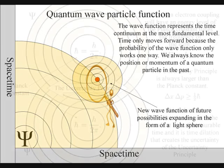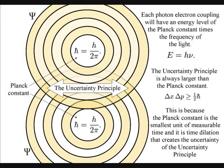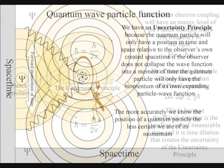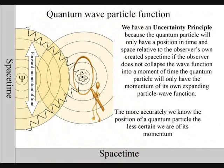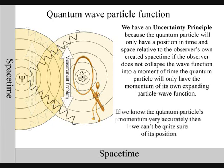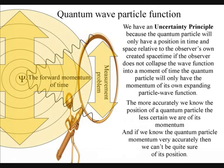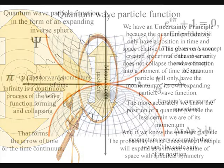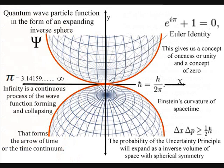This theory is based on the simple idea that Heisenberg's uncertainty principle of quantum physics is the same probability that the observer will have with any future event. The uncertainty principle is formed by a quantum wave particle function that expands as an inverse light sphere of electromagnetic radiation.